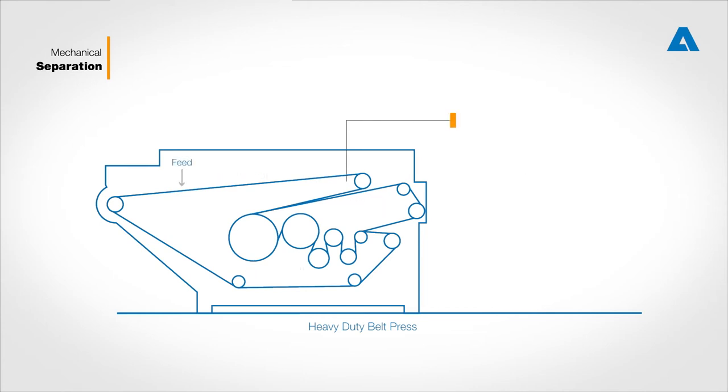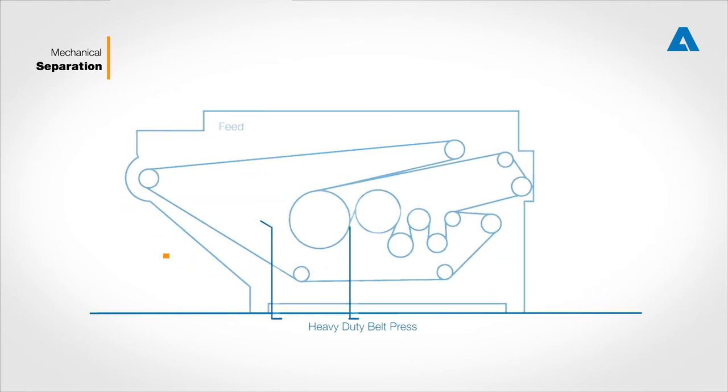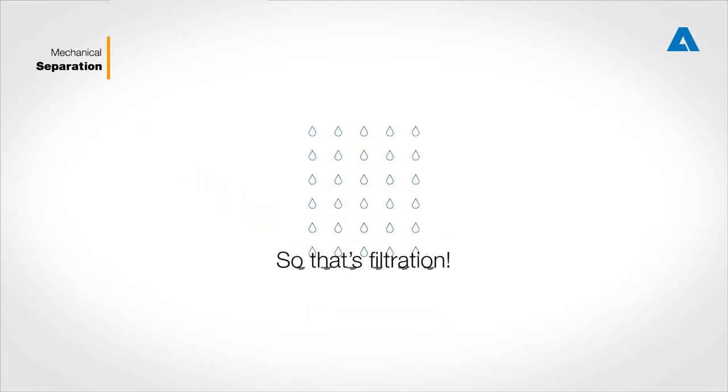To separate the water, the sludge is first sandwiched between two belts and then squeezed through rollers. The filtrate exits through drains, while solids are discharged onto a conveyor belt. So that's filtration.